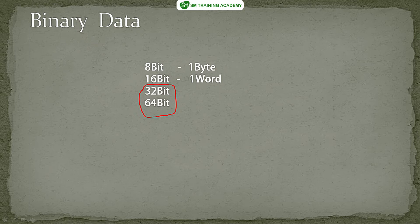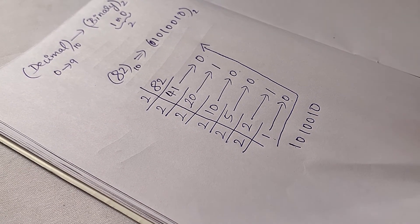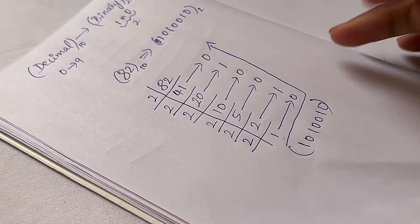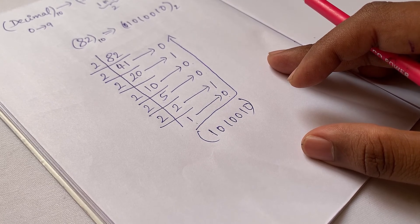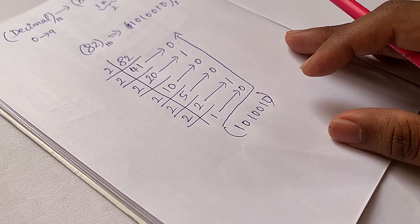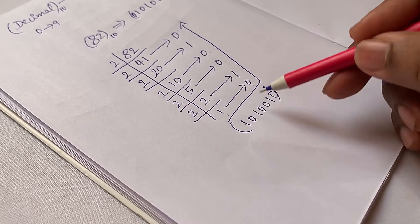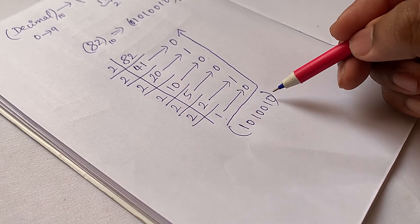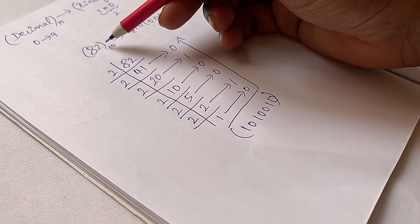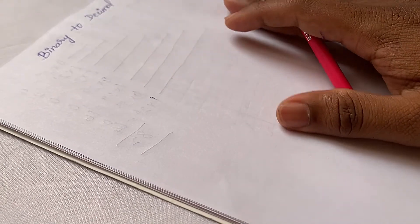Now let's understand how to convert binary numbers into equivalent decimal format. We'll take the same example — the binary number we obtained for decimal 82 — which is 0 1 0 1 0 0 1 0, and convert it back to decimal. This is binary-to-decimal conversion.